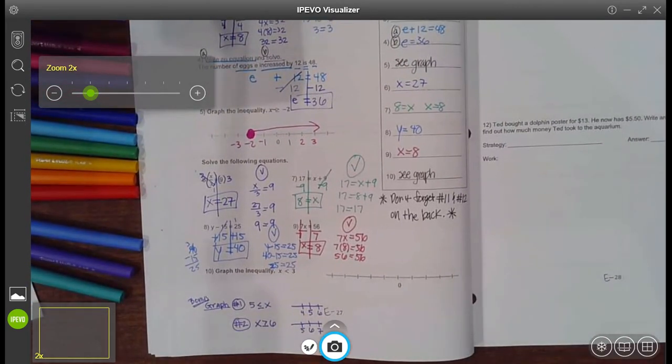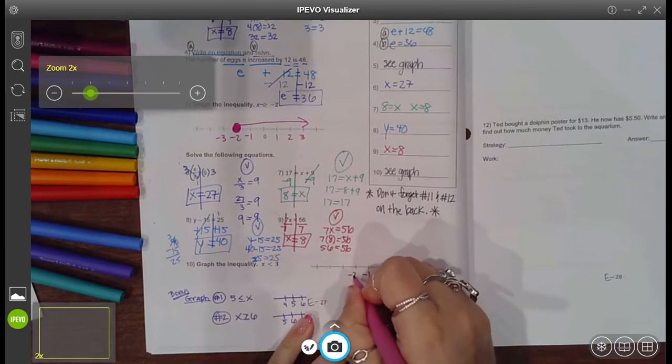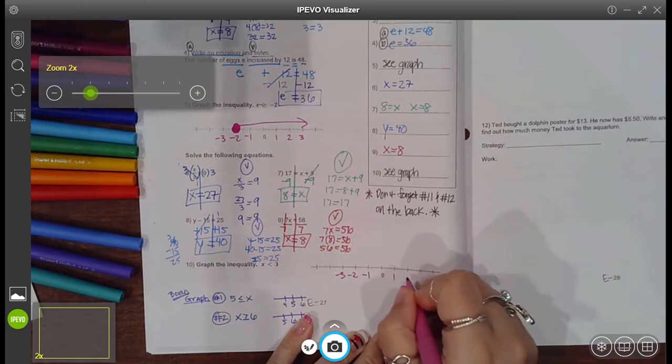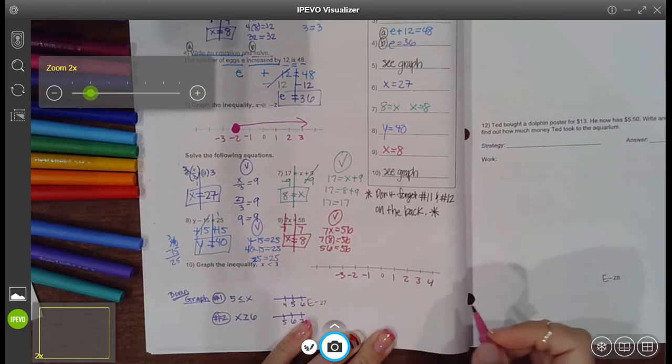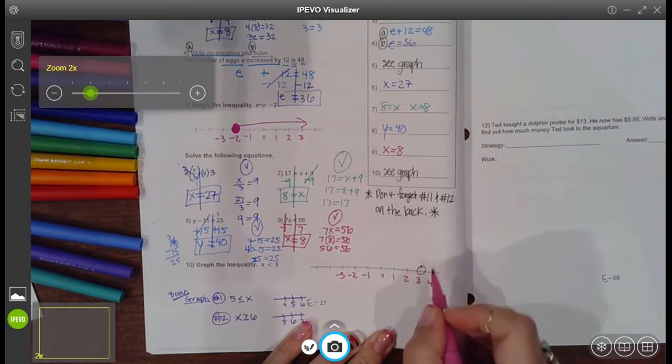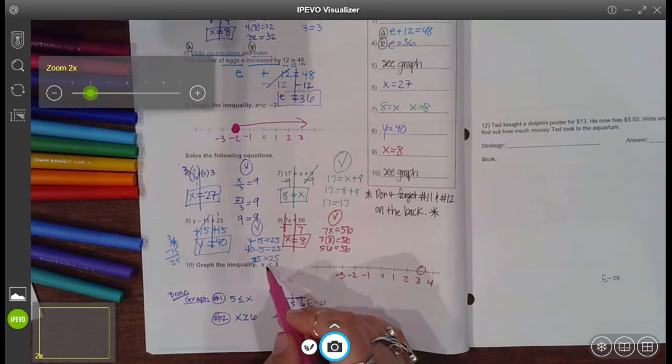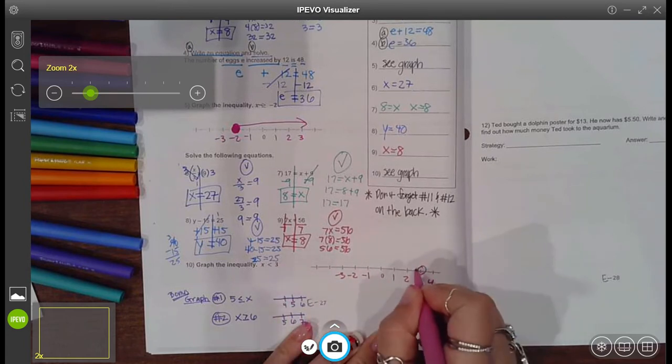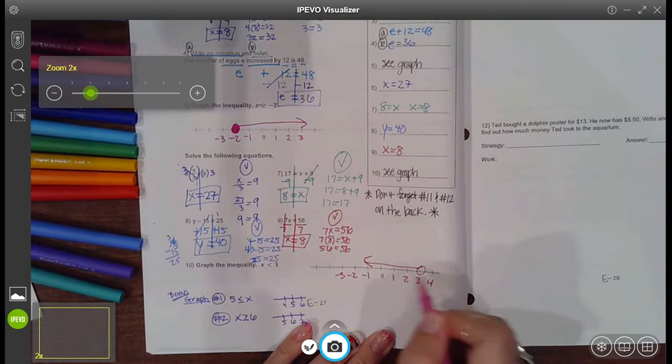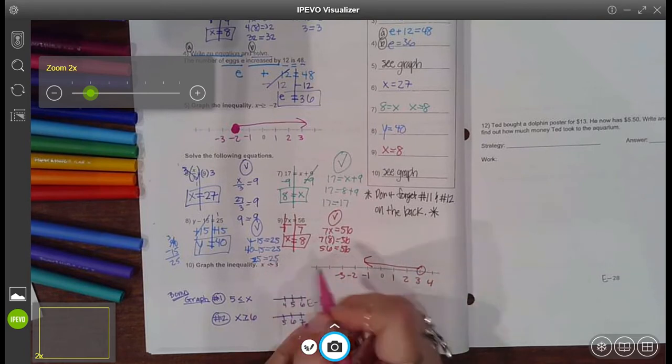The next one, number 10 says graph the inequality x is less than 3. So this is negative 1, negative 2, negative 3, positive 1, positive 2, positive 3, 4. At 3, I'm going to draw my circle. Is it open or closed? Well, there's no line underneath. So it's not including that point. It's an open circle. What's facing the variable? It's the less than sign. So where do numbers get smaller? To the left. Isn't 2, 1, 0 less than 3? Mm-hmm. Or since the variable's on my left, there's your arrowhead, right?